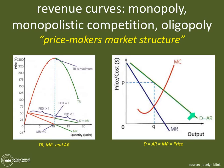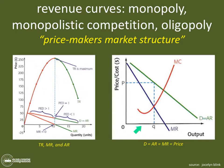Those two lines — the downward-sloping demand curve equal to average revenue, and the marginal revenue curve below it — are what the revenue curves look like in price makers market structures: monopoly, monopolistic competition, and oligopoly. When drawing these diagrams, you first draw the axes, then the demand curve equaling average revenue, then the marginal revenue curve, and then stop before adding cost curves.